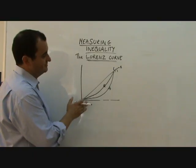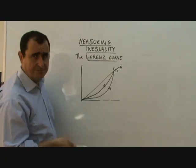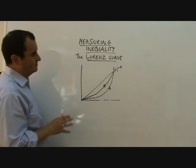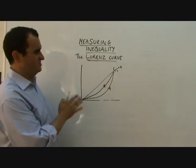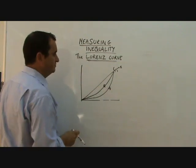Anyway, the Lorenz curve shows us how equal or unequal is, we can use it to compare the same country at different time periods, we can use it to compare different countries, but some people don't like the Lorenz curve to say it's a bit, you know, you're just looking at lines and you're trying to make judgments from lines, better to work with real numbers.